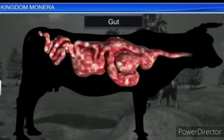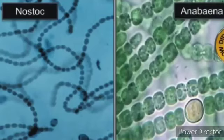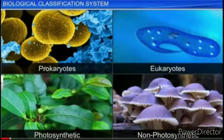Methanogens are present in the gut of several animals like cows and produce methane gas in extreme habitats. These are called archaebacteria. The normal bacteria are called eubacteria. They can be autotrophs or heterotrophs — photosynthetic or chemosynthetic.